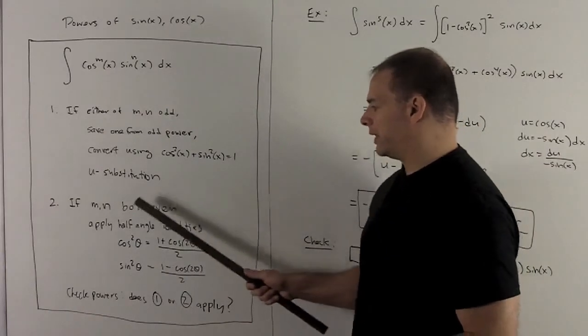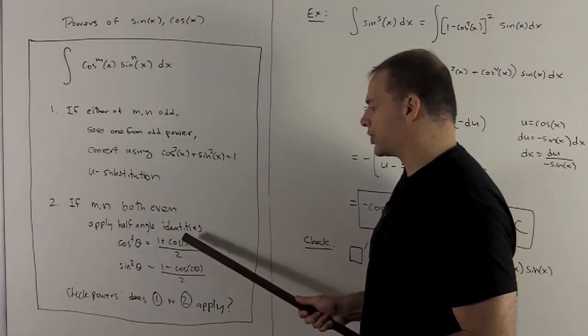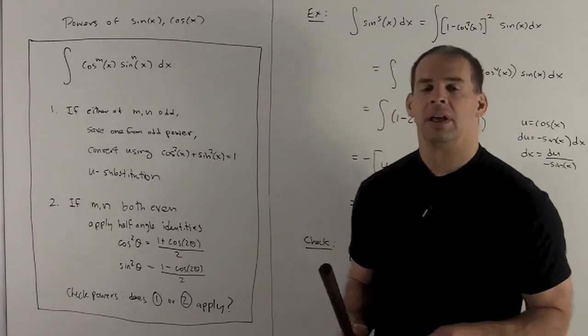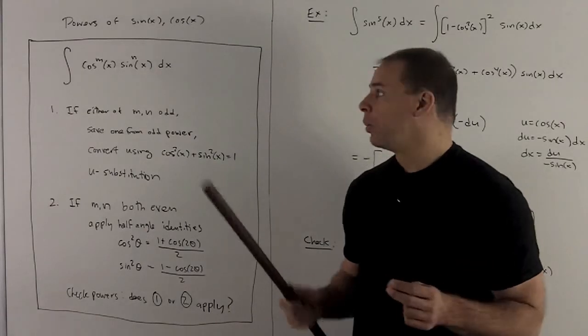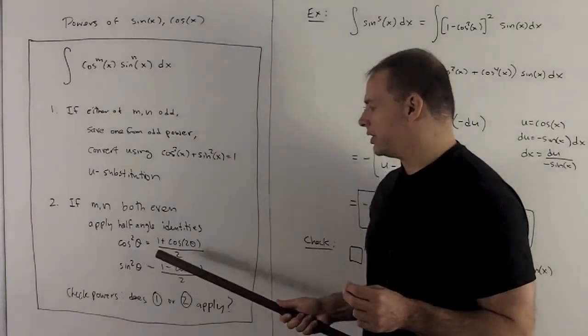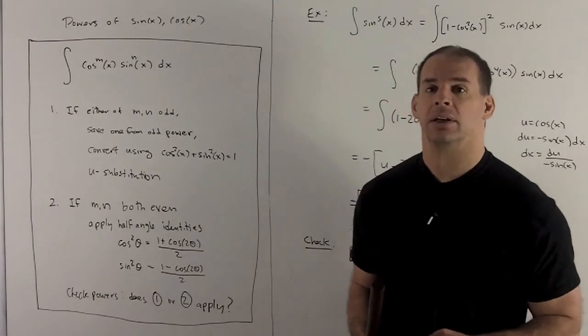When I do my substitution with these, we're going to have something that's a polynomial in cosine of 2 theta. Then we have to just take a look at the exponents on those and decide whether case 1 applies, or will I need to try case 2 again and possibly again and again.